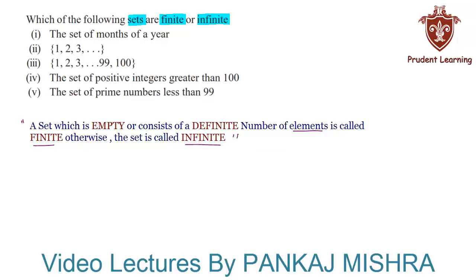The first set given to us is the set of months of a year. We know that a year consists of 12 months. Therefore, the number of elements in the given set is 12, hence it is a finite set.